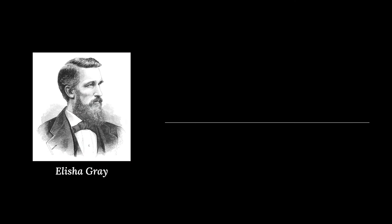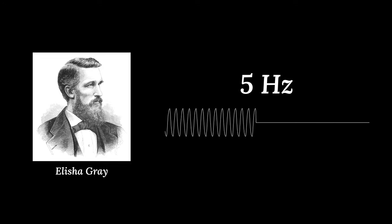Take Elisha Gray. The telegraph had only existed a few decades when he made a discovery. When you press the lever once a second, you transmit a tone at a rate of 1 hertz. Twice a second, 2 hertz, and so on.